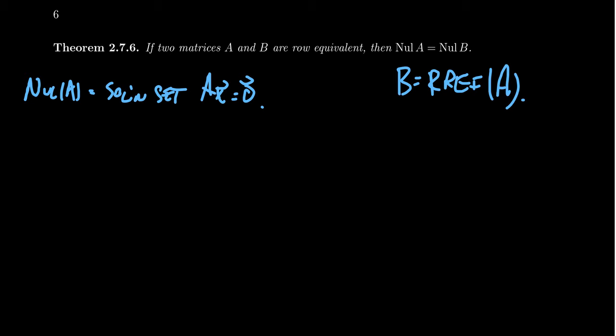So our strategy for finding a basis for the null space is going to be the following. We're going to use the same technique we've done before to solve the homogeneous system, as we did in section 2.6. Then we're going to focus on the non-pivot columns of the matrix. These non-pivot columns correspond to the free variables, and the free variables are what produce non-trivial solutions to the homogeneous system.